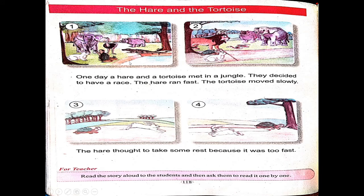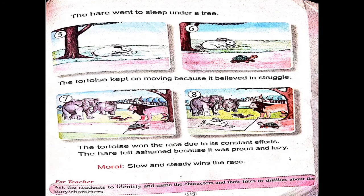The Hare and the Tortoise. One day a hare and a tortoise met in a jungle. They decided to have a race. The hare ran fast and the tortoise moved slowly. The hare thought to take some rest because it was too fast. The hare went to sleep under a tree. The tortoise kept on moving because it believed in struggle. The tortoise won the race due to its constant efforts. The hare felt ashamed because it was proud and lazy. The moral of the story is: slow and steady wins the race.